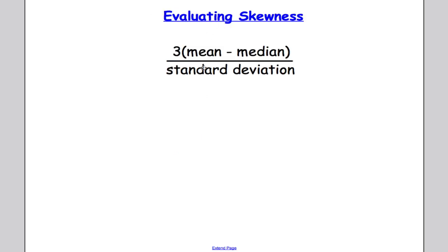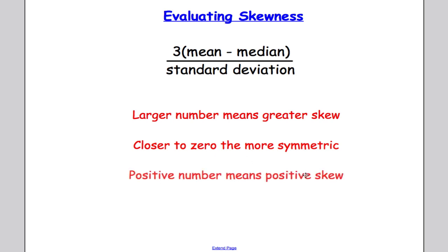But we would like to evaluate skewness, and we do that by using the mean, median, and standard deviation. So if I do three times the mean minus the median and divide that by its standard deviation, that will give me a value for its skewness. Now the bigger the numbers, the greater the skew, and the closer to zero, the more likely it is to be symmetric. If we have a positive number, it's a positive skew. If we have a negative number, it's a negative skew.